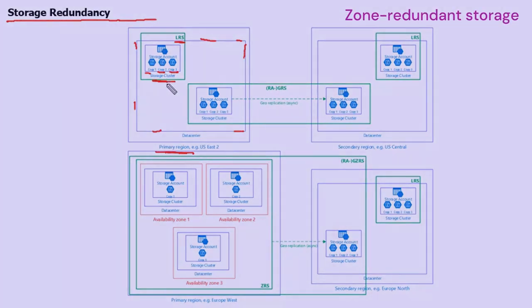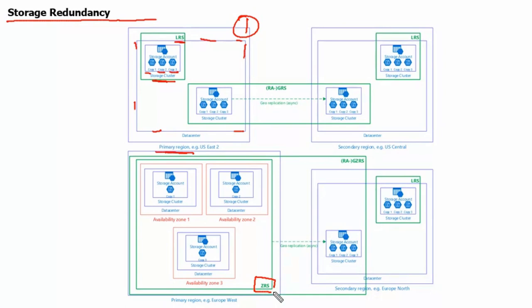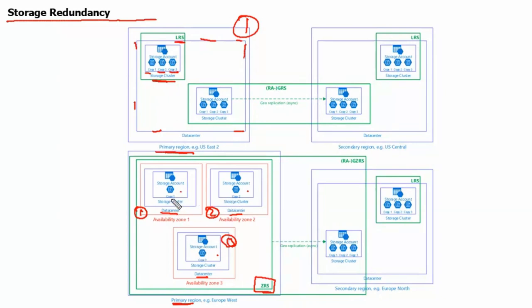The second option is ZRS, zone-redundant storage. ZRS replicates the storage account synchronously across three Azure availability zones in the primary region. We have one availability zone, a second availability zone, and a third availability zone. These availability zones have different data centers, and it maintains three copies — one copy in each availability zone. So instead of having three copies in one data center like LRS, it has one copy in each of three different data centers.